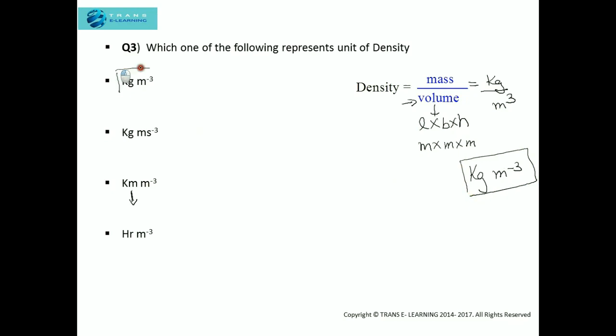So this is the answer. The first one, kg per meter cubed, is the right unit for density. The second option cannot be the unit because it has seconds, which is related to time, and the formula for density doesn't involve time.